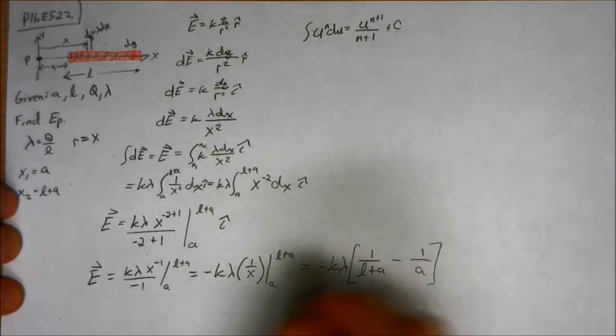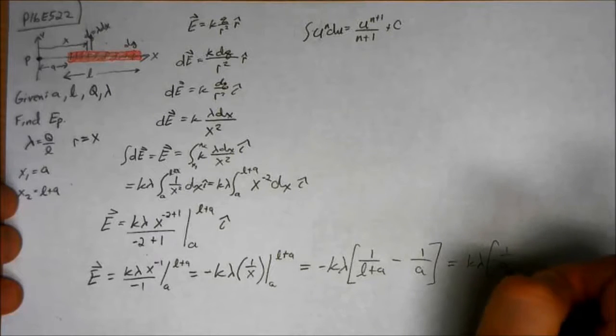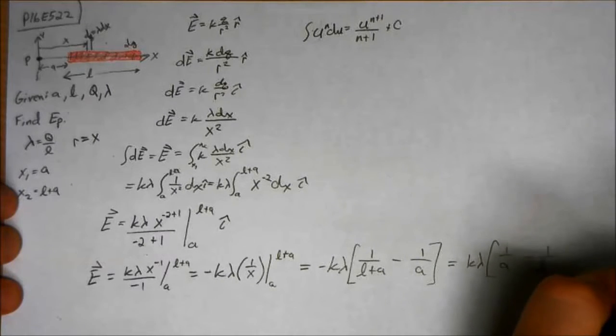And you can absorb the negative sign in there and say K lambda 1 over A minus 1 over L plus A.